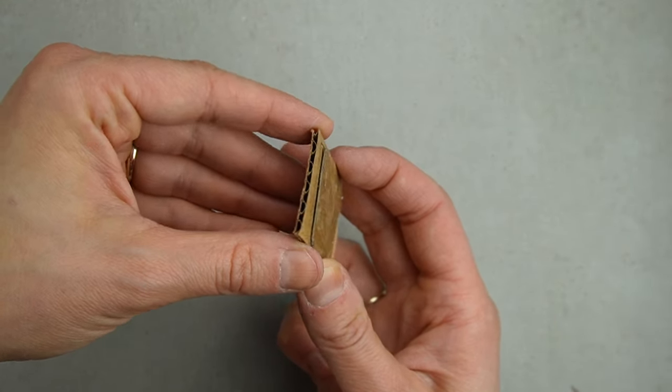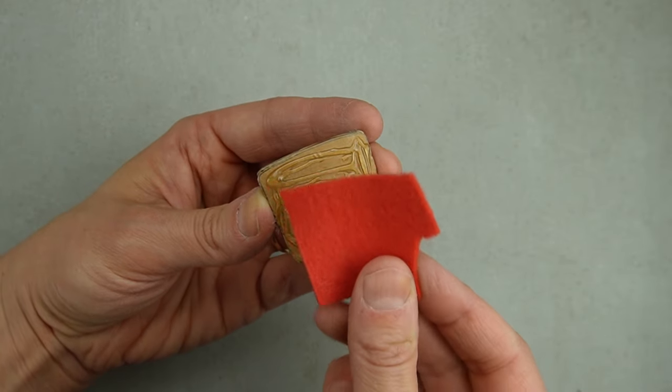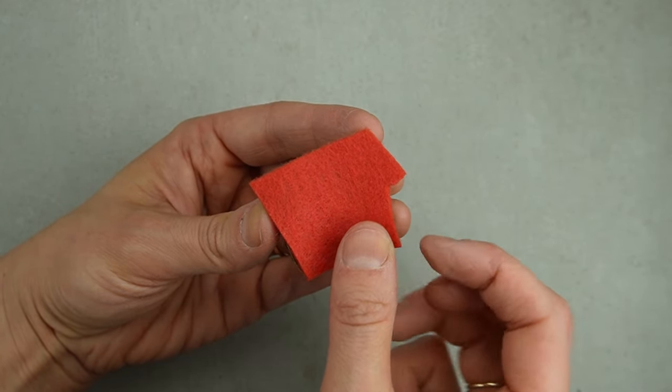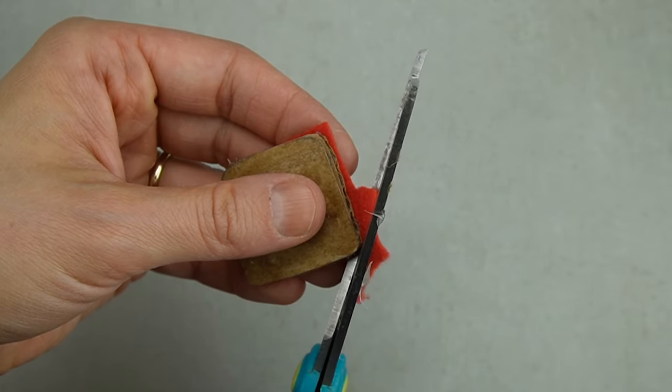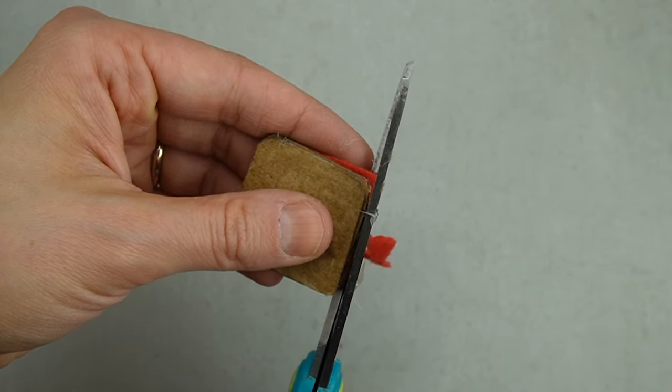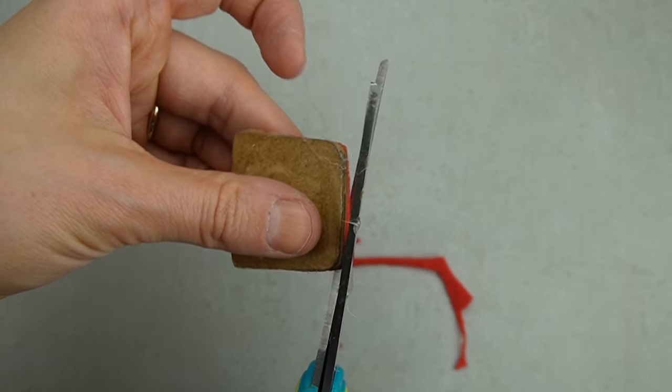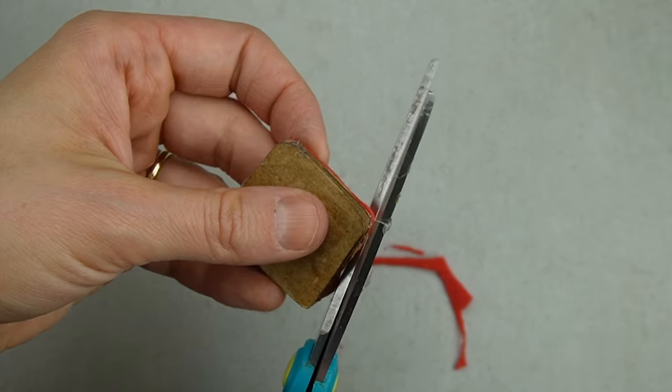I glued the chipboard seat to some cardboard and added a layer of felt as batting. 1:12 scale chairs have a seat height of about 1.5 inches. I made the front legs 1.25 inches tall to accommodate a 0.25 inch thick cushion.